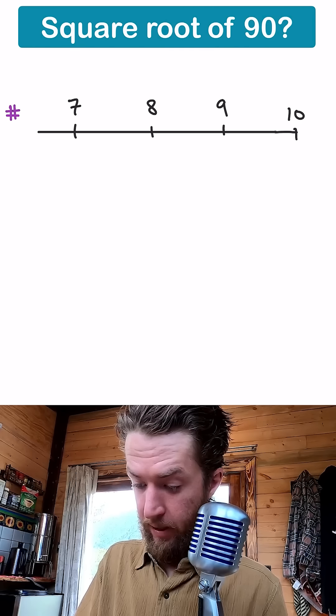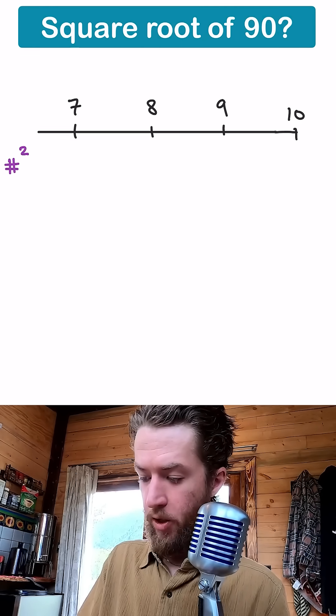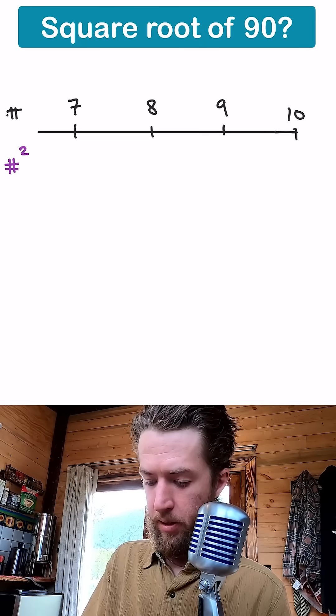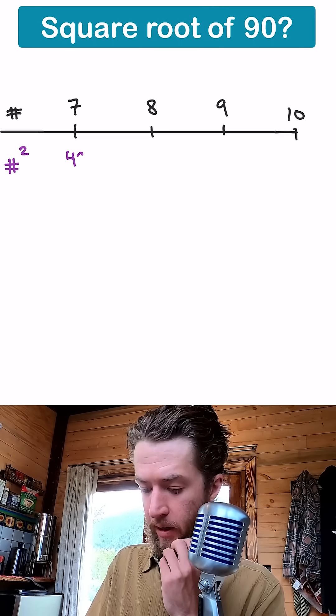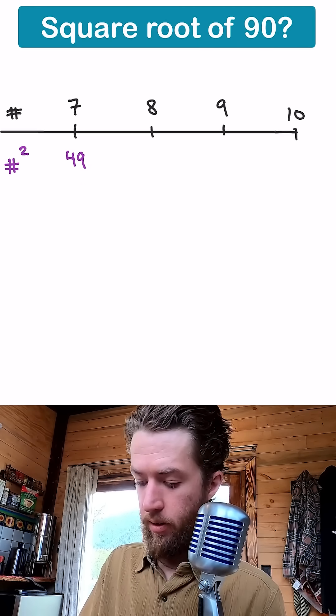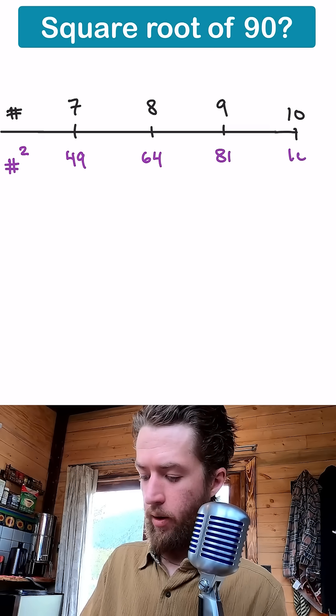On the bottom side though, in fact, let me do the bottom in purple. So the bottom is going to be a number squared. The top is just our numbers. But the bottom is going to be our numbers squared. So 7 squared, 49. 8 squared, 64. 9 squared, 81. 10 squared, 100.